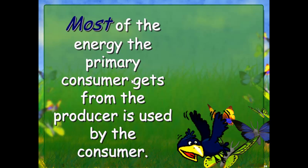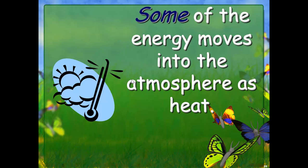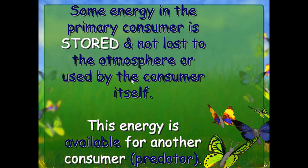Most of the energy the primary consumer gets from the producer is used by the consumer for normal life functions. Some of the energy moves into the atmosphere as heat — organisms release a lot of energy as heat through sweat. Some energy is stored and not lost to the atmosphere or used by the consumer. So the majority is used, some is released as heat, and a little bit is stored.